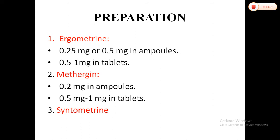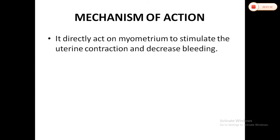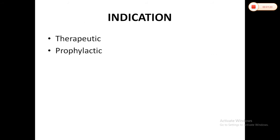Methergine is available as 0.2 mg in ampoules and 0.5 mg in tablets. The mechanism of action of ergo derivatives: this drug directly acts on the myometrium to stimulate uterine contraction and decrease bleeding.